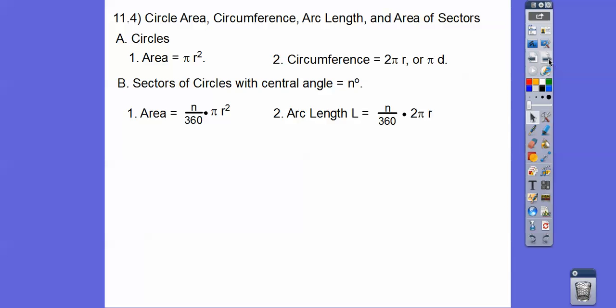And then the arc length, we call it L. So if this is my wedge shape, and you got this little arc right here, this is my arc length. So the length of this is the fraction of the circle, n over 360, times the circumference formula, 2πr, or π times d, depending on what they give you.